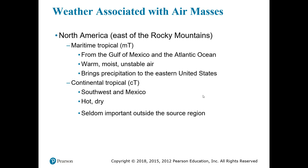The maritime tropical comes from the Gulf of Mexico and, to some extent, the Atlantic Ocean. It's warm air and it brings precipitation to the eastern United States. There's also the continental tropical, which is the southwestern dry hot air — obviously important regionally to the southwest. But east of the Rockies is dominated by those two north-south type air masses, so we don't really see a lot of interplay between the continental tropical and the other air masses.